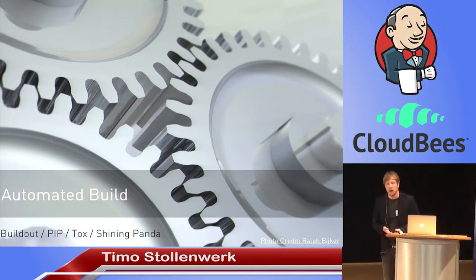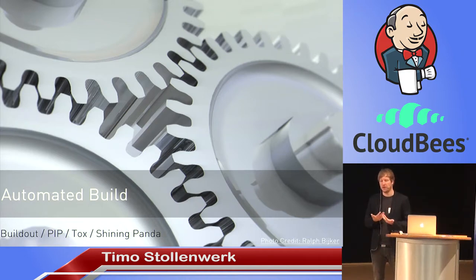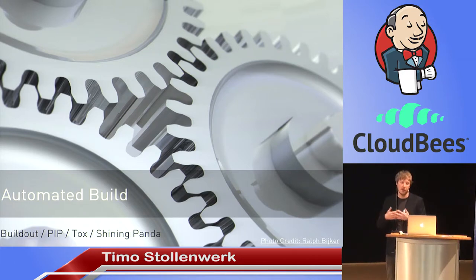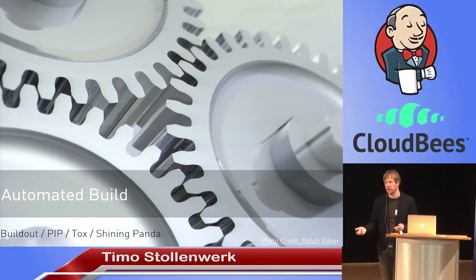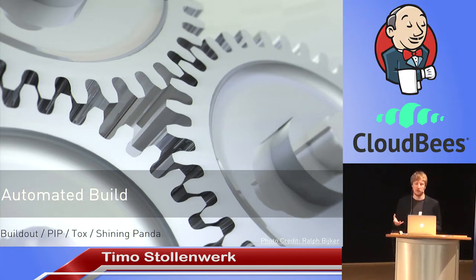Other important tools for building Python projects on Jenkins are virtualenv to create virtual environments for Python, and tox, which is a configuration language to tell a CI server which Python versions you want to build against. All those tools are supported by the Shining Panda Jenkins plugin, which lets you point at a tox file and have tox tell Jenkins to build against Python 2.6, 2.7, and Python 3.3 with the appropriate environment variables.